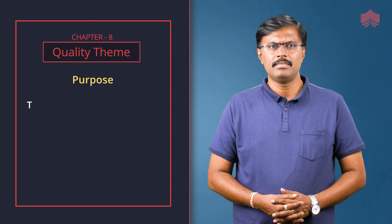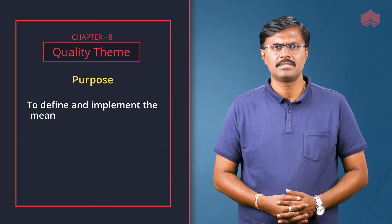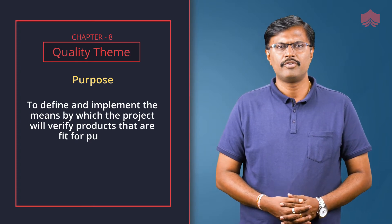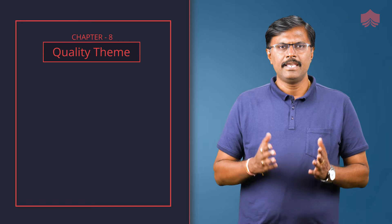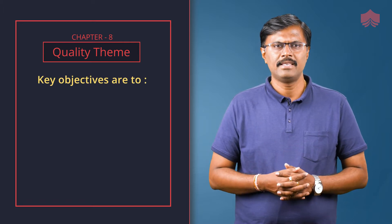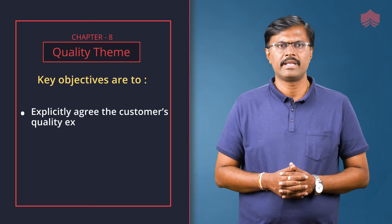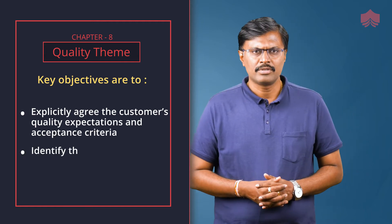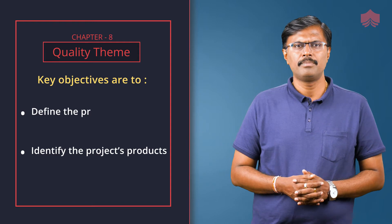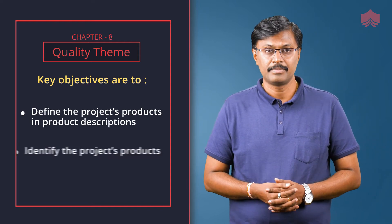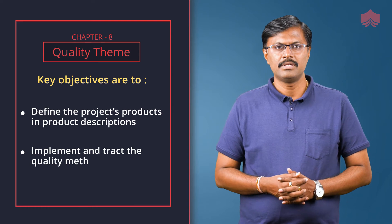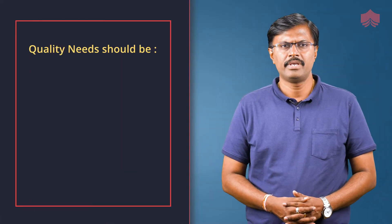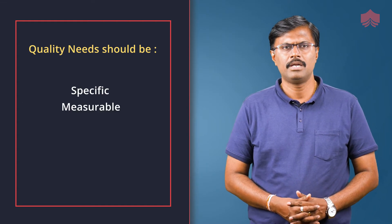The purpose of quality theme is to define and implement the means by which the project will verify products that are fit for purpose. Key objectives of quality theme are to explicitly agree the customer's quality expectations and acceptance criteria, identify the project's products, define the project's products in product descriptions, and implement and track the quality methods employed throughout the project. Quality needs should be specific, measurable, and not subjective.